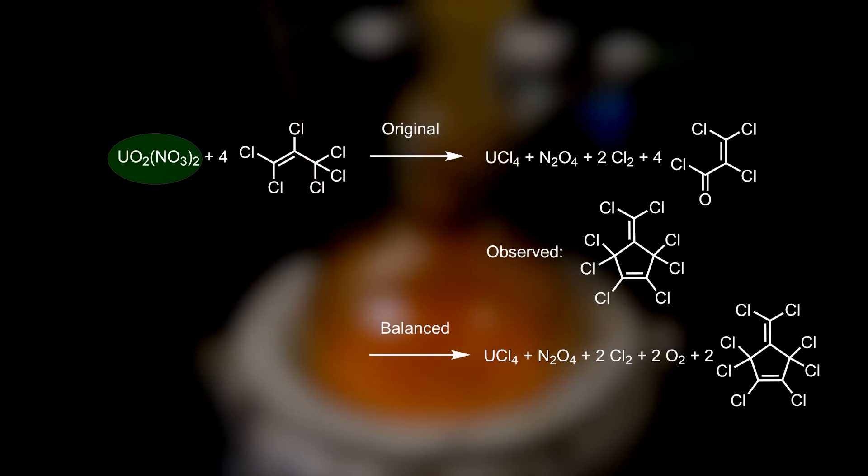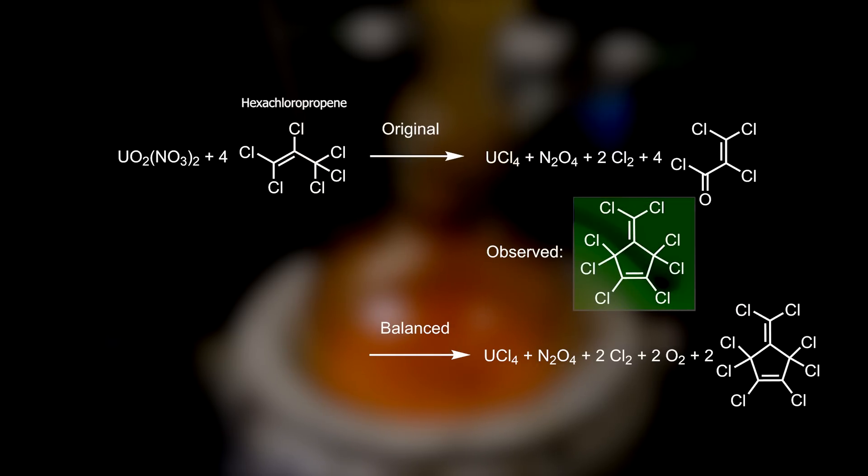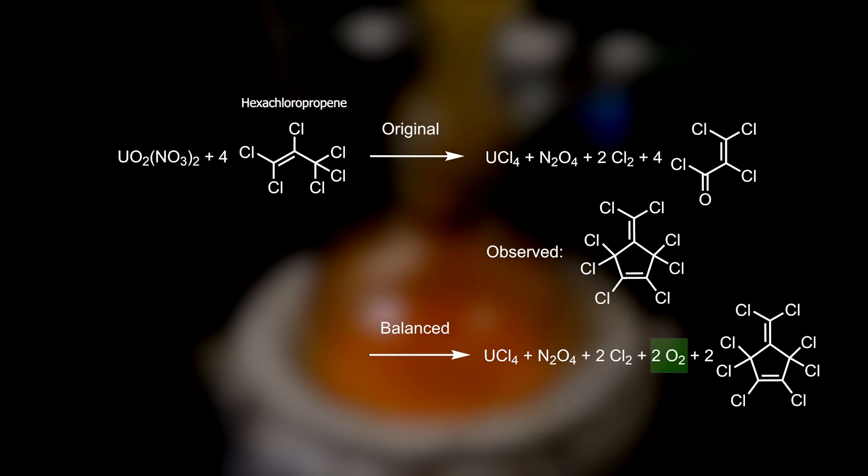In this reaction, uranyl nitrate reacts with four equivalents of hexachloropropene, converting it into uranium tetrachloride. Originally, this reaction was thought to produce dinitrogen tetroxide, chlorine, and this acid chloride. But new studies have found that the real product is this dichlorohexachlorofulfene, which can be recovered. How this reaction proceeds exactly is not fully detailed yet, but if we consider the formation of this product, we need to add oxygen as a product to balance it.